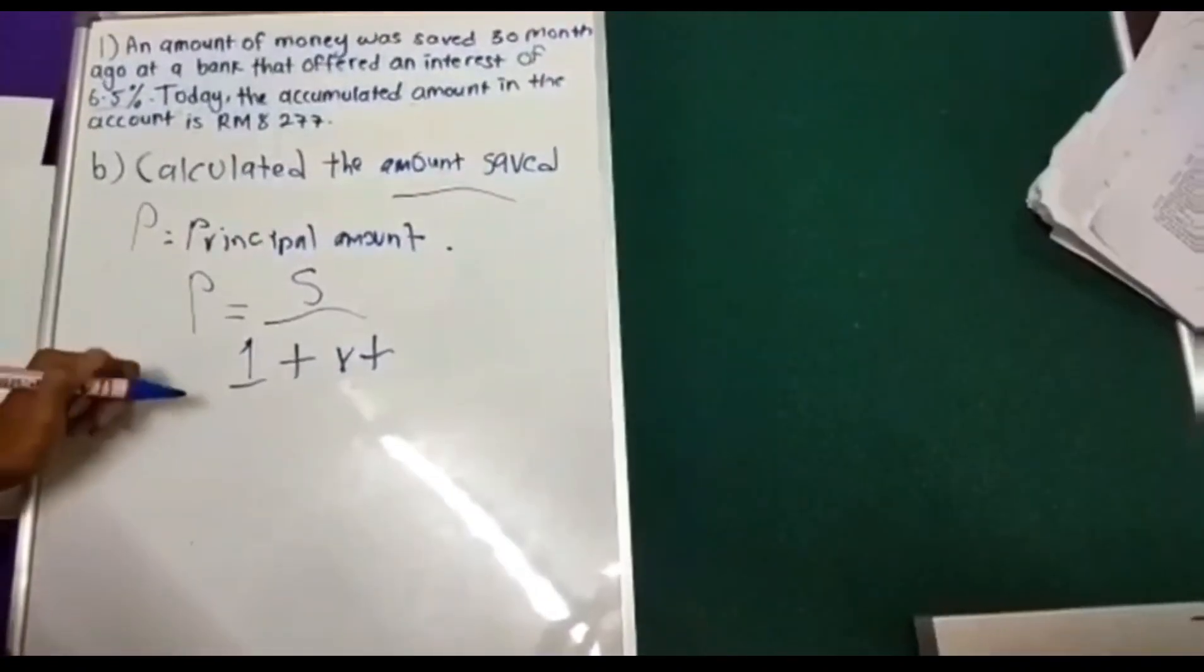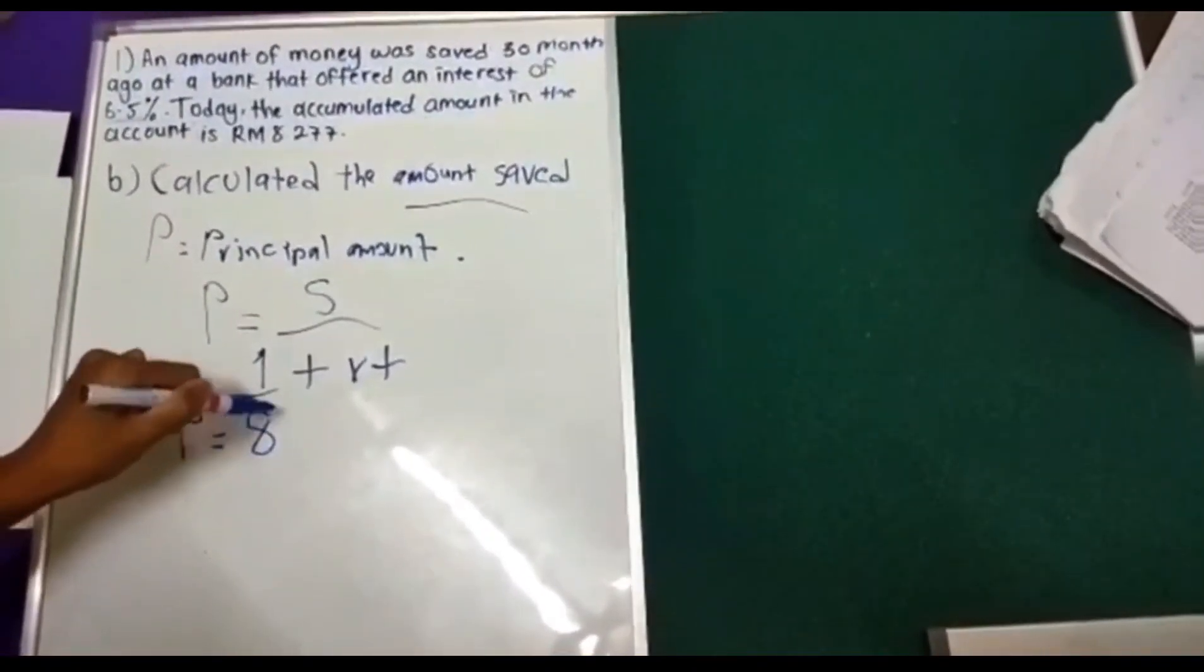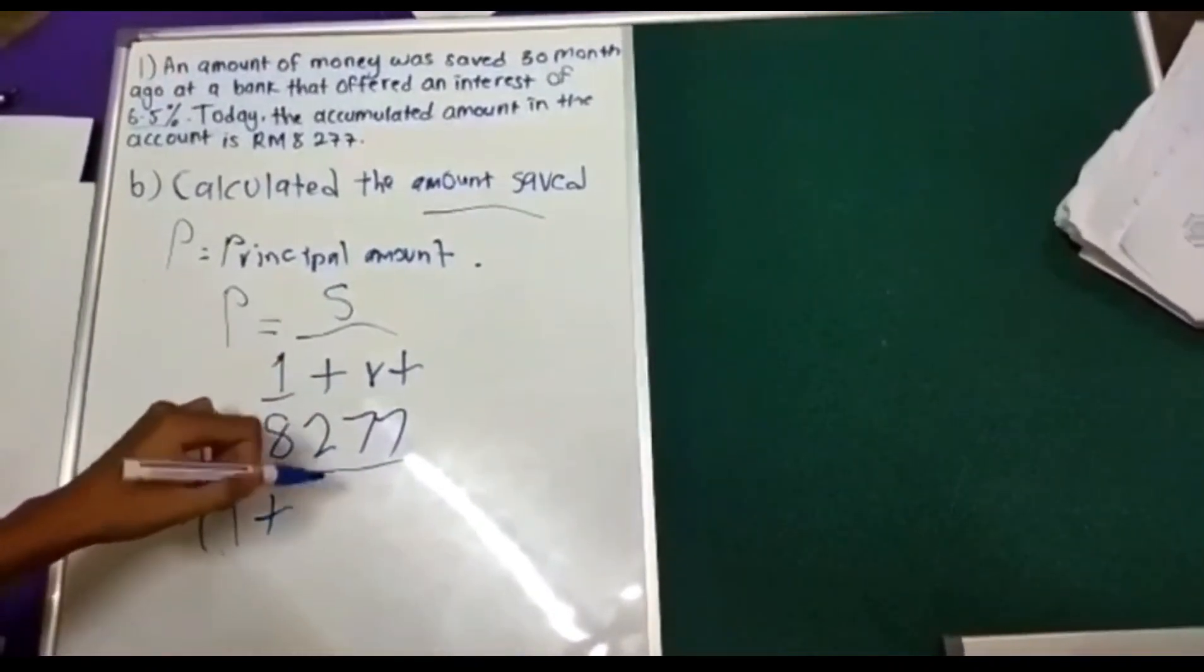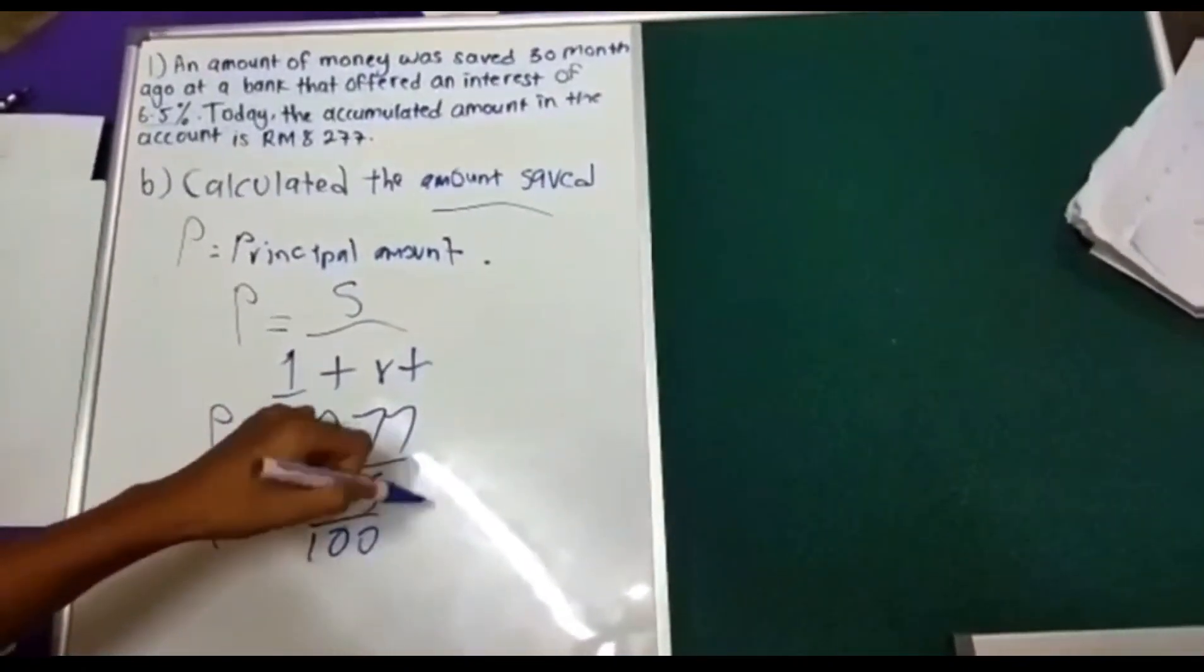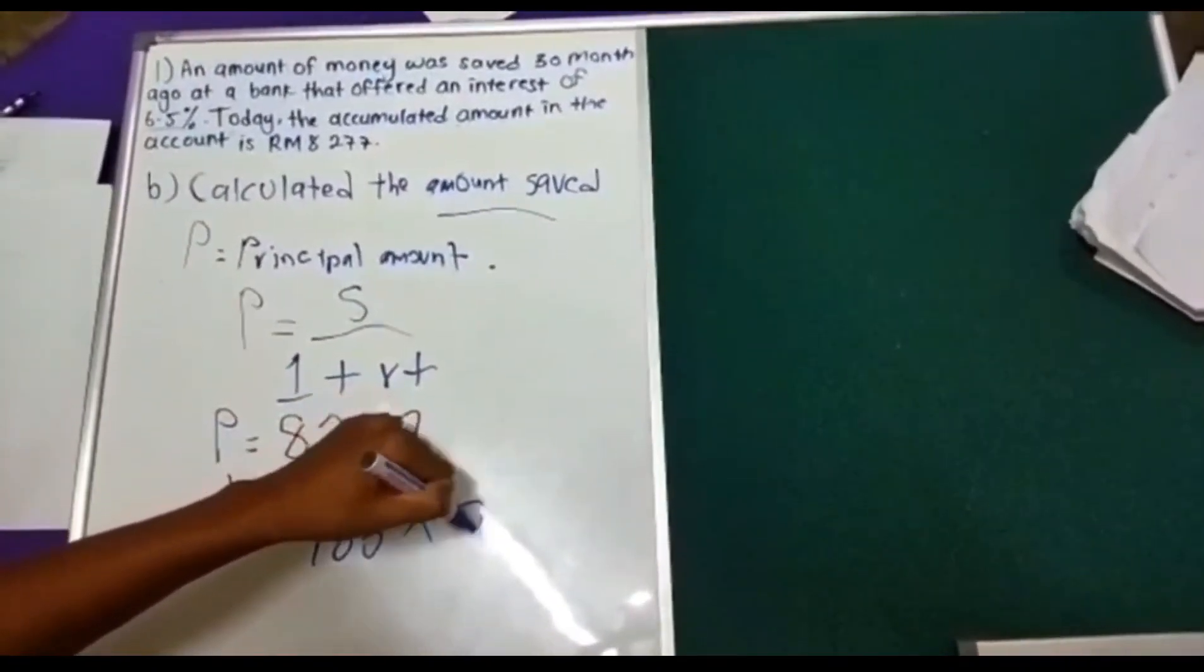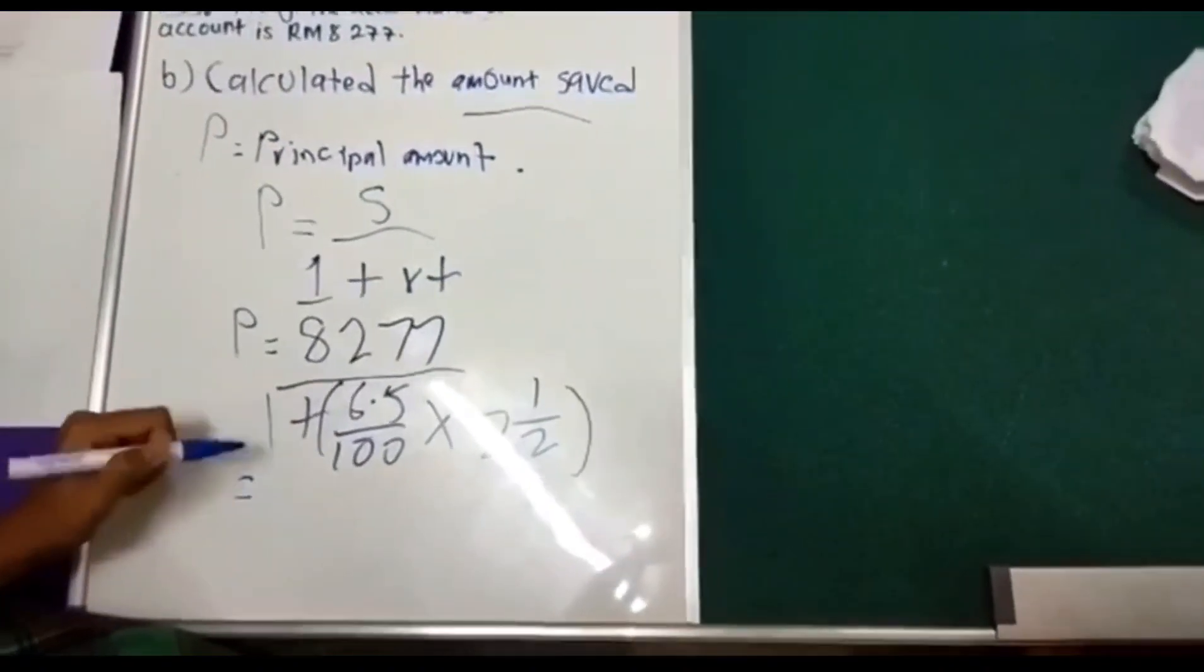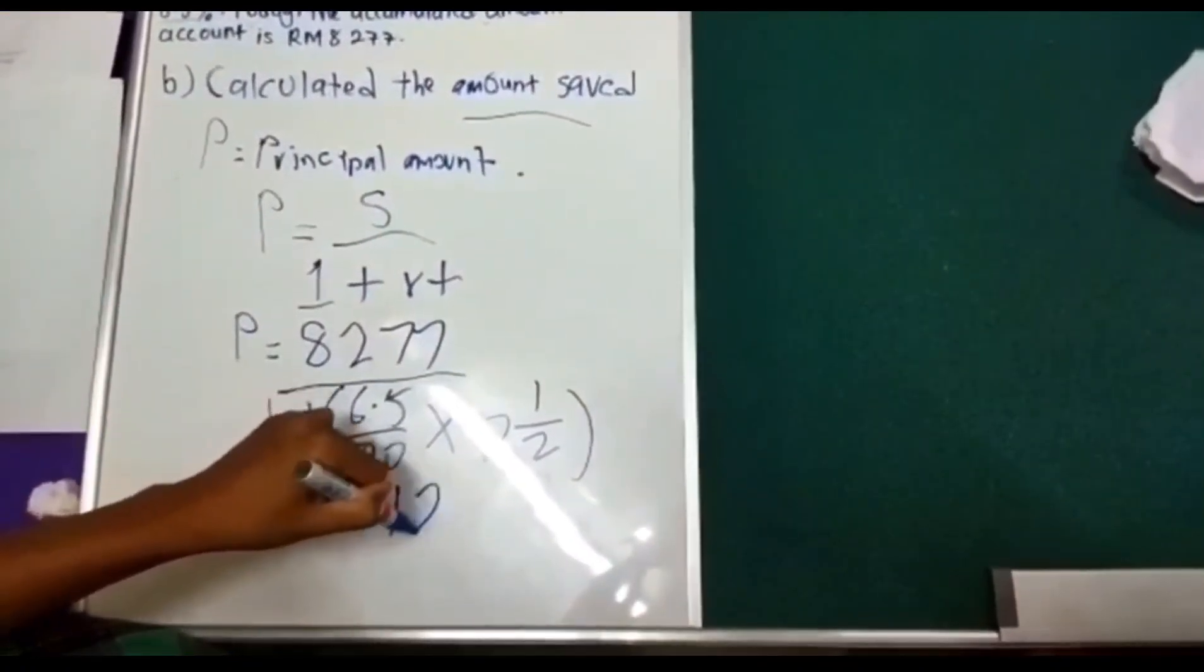So, S is 8,277 divided by 1 plus 6.5 per 100 times 2.5 years. So, the answer is RM7,120.